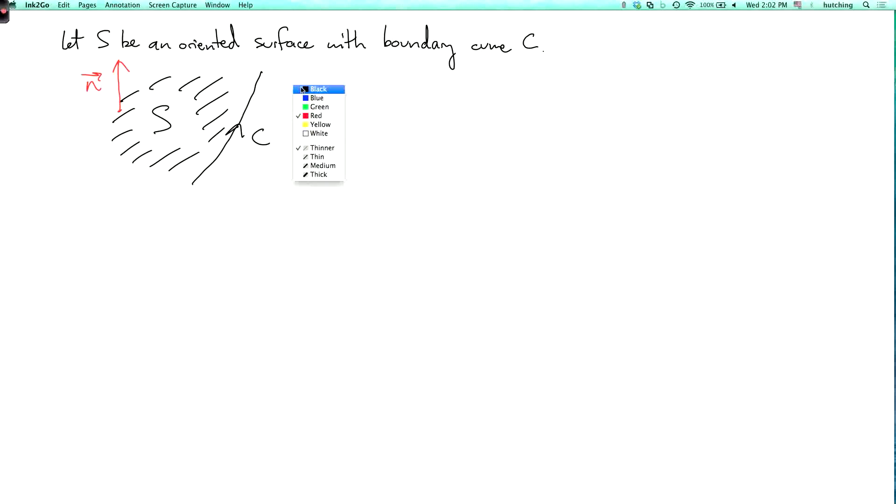Another way to say this is that if you imagine a little person walking along the edge of the surface, then the person's head should be pointing up with respect to the normal vector N. And then as you walk along the curve C, the surface should be to your left. And if you step to the right, you'll fall off the edge of the surface.